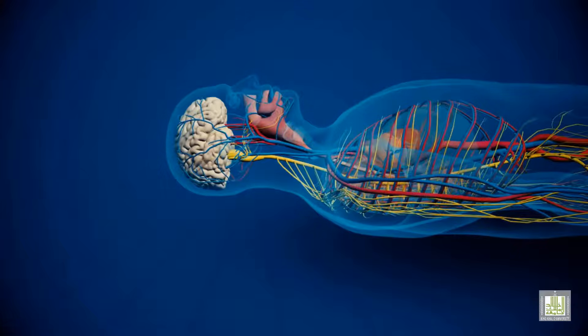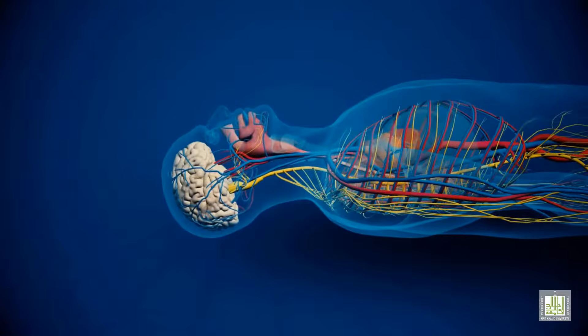A is airway. Open the airway by one of the following: head tilt and chin lift in the absence of spinal injury as shown in the picture, or jaw thrust in case of spinal injury as shown in the picture.